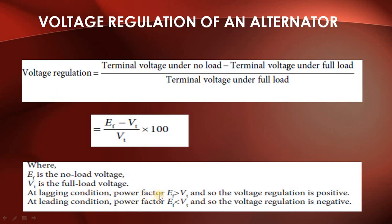At lagging power factor, EF is greater than VT, so the voltage regulation is positive. At leading power factor, EF is less than VT, giving negative voltage regulation.